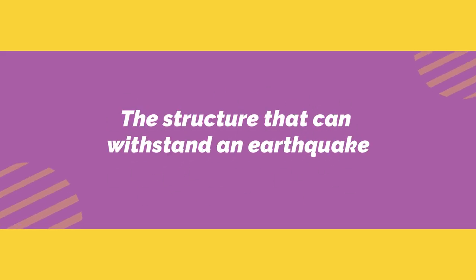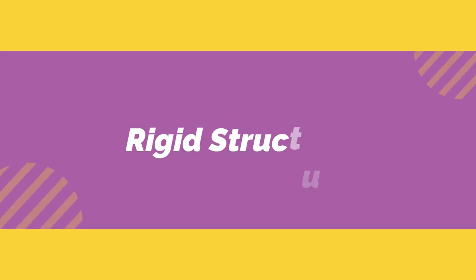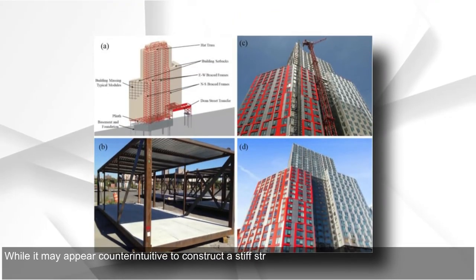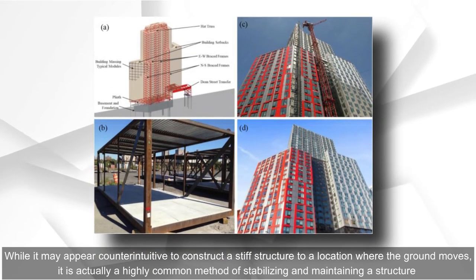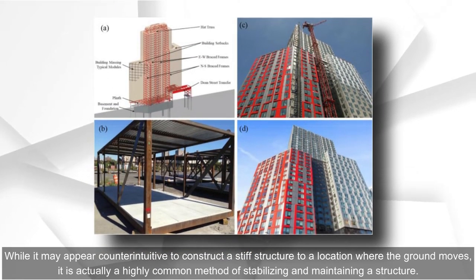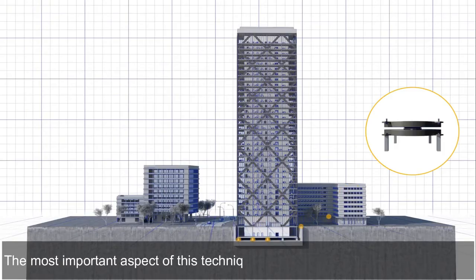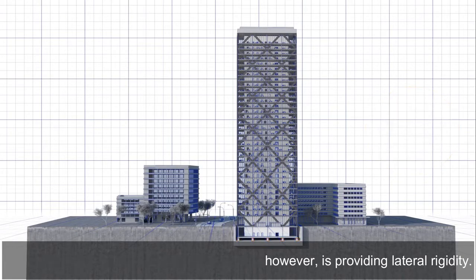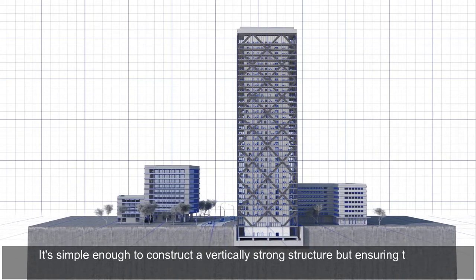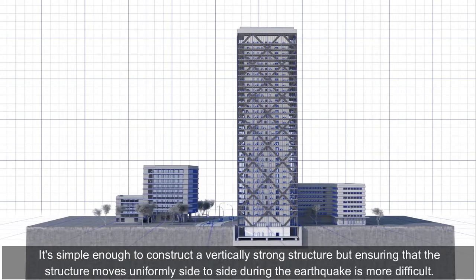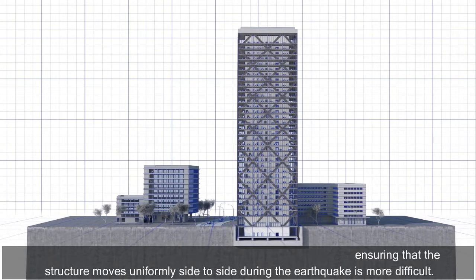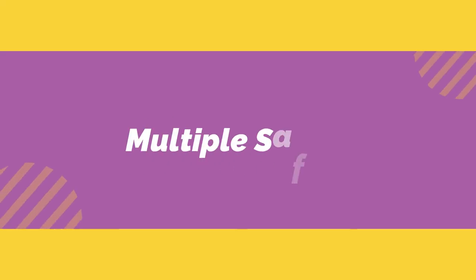Rigid structure. While it may appear counterintuitive to construct a stiff structure in a location where the ground moves, it is actually a highly common method of stabilizing and maintaining a structure. The most important aspect of this technique, however, is providing lateral rigidity. It is simple enough to construct a vertically strong structure, but ensuring that the structure moves uniformly side to side during the earthquake is more difficult.